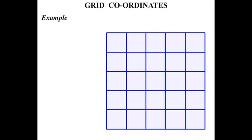Now in this lesson we take a look at grid coordinates. Example. We have a grid there. We're going to label the axis, the bottom axis and the side axis.